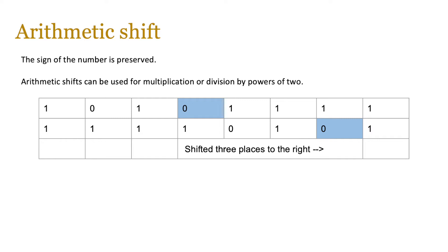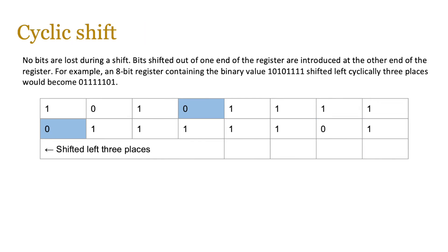In a cyclic shift no bits are lost during the shift. When bits move left or right they are not replaced with zeros or ones — instead the bits that fall off one end are reintroduced at the other end, like a cycle. So in an 8-bit register containing 1 0 1 0 1 1 1 1, shifting left cyclically three places simply becomes 0 1 1 1 1 1 0 1 — out one end and introduced at the other side.